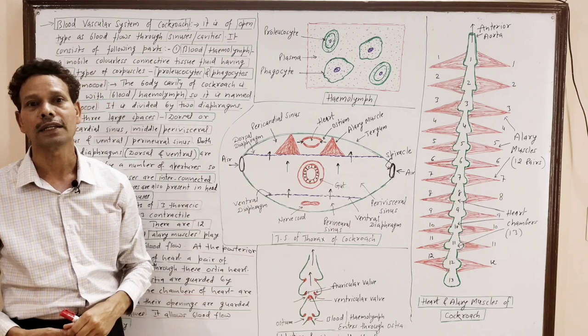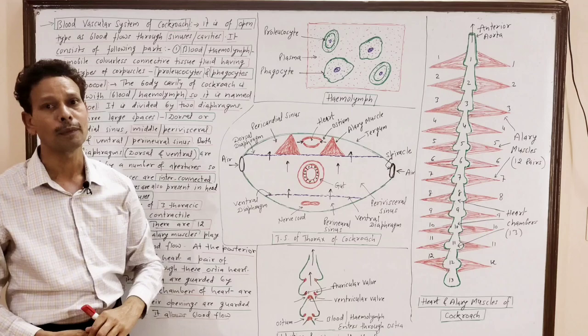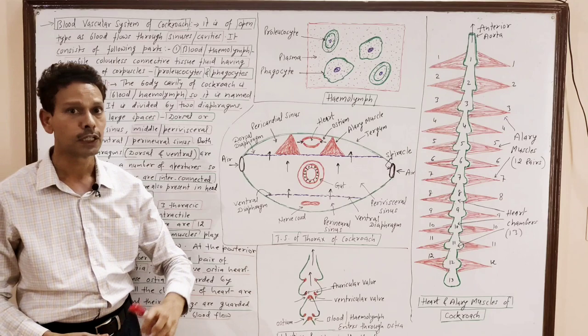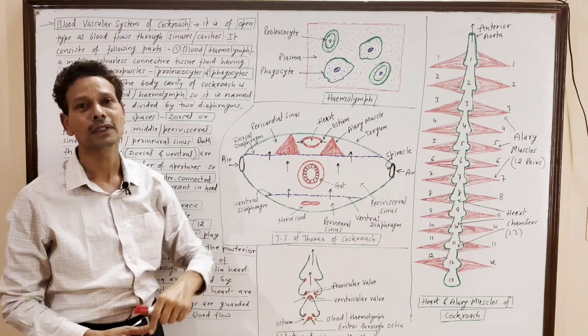The blood vascular system of cockroach comprises the following parts. Its first part is blood, or hemolymph. In case of cockroach, the blood is colorless. It is a colorless, mobile, connective tissue fluid, and that colorless fluid is named hemolymph.